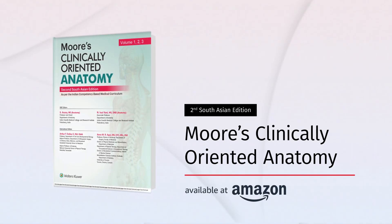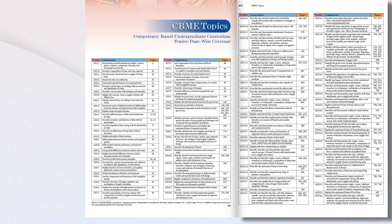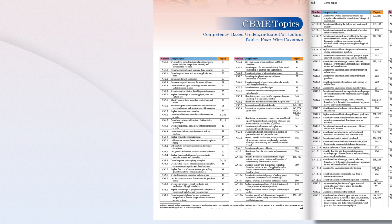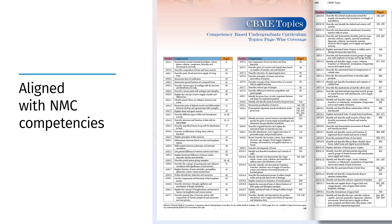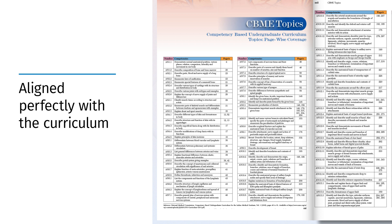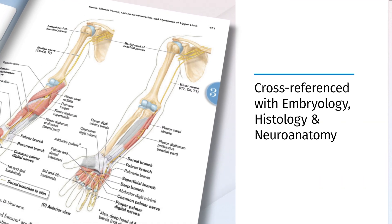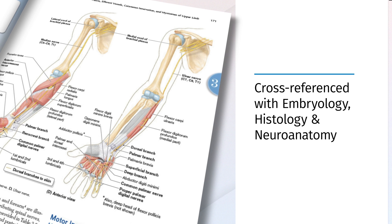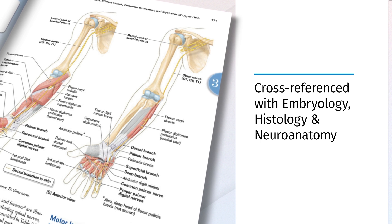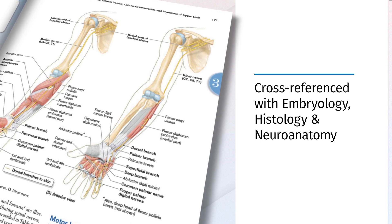Presenting the second South Asian edition of Moore's Clinically Oriented Anatomy — the trusted resource for mastering anatomy with a clinical focus. Designed to meet NMC competencies, this edition aligns perfectly with the curriculum, making it an indispensable tool for medical students. It integrates cross-references to essential anatomy texts like Langman's Medical Embryology and Snell's Clinical Neuroanatomy, ensuring a comprehensive understanding.